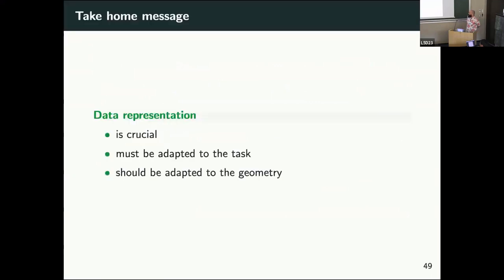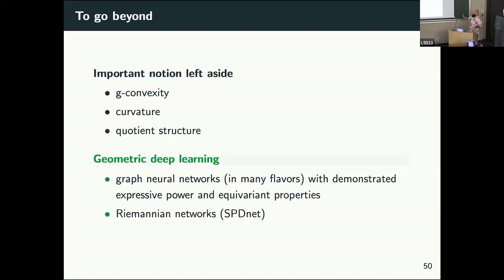In conclusion: data representation is a crucial step that must be well adapted to the task and to the geometry. There are many things I left aside in this presentation — structures about convexity generalized to geodesic convexity, notions about correction and question structure. Deep learning has also been adapted to this setup: there are graph neural networks with nice properties over expressive power and invariance, and deep networks applied to SPD matrices as well.